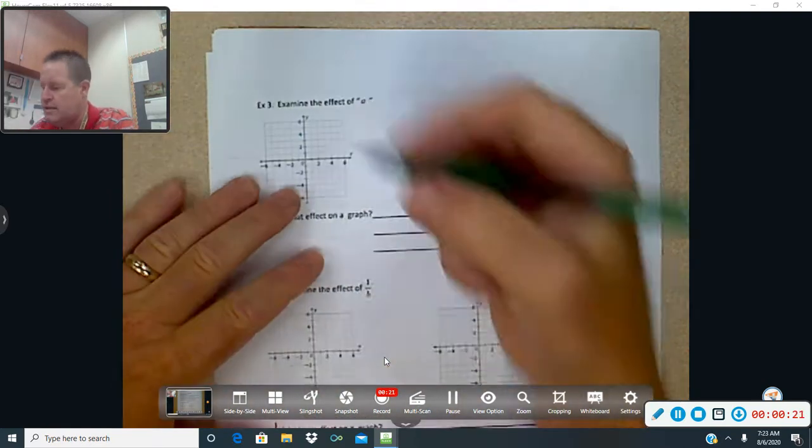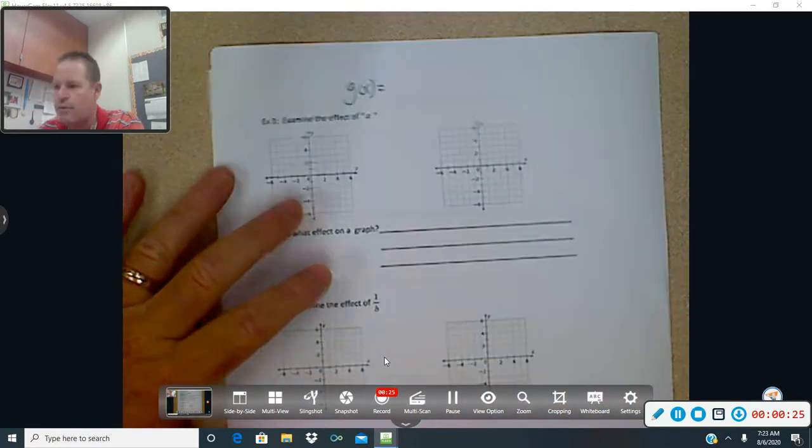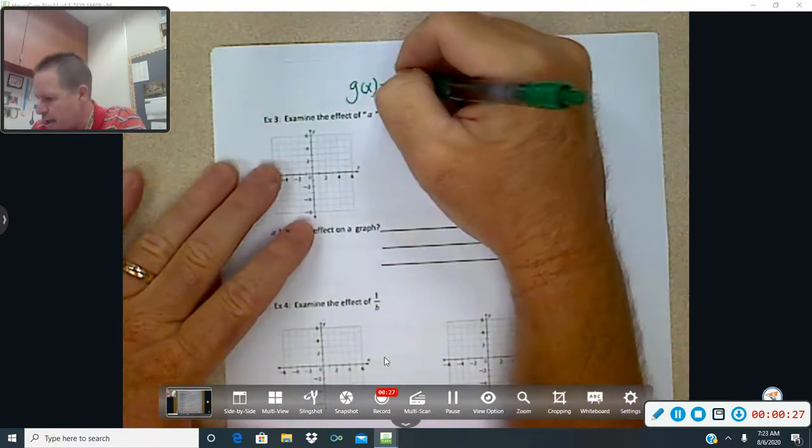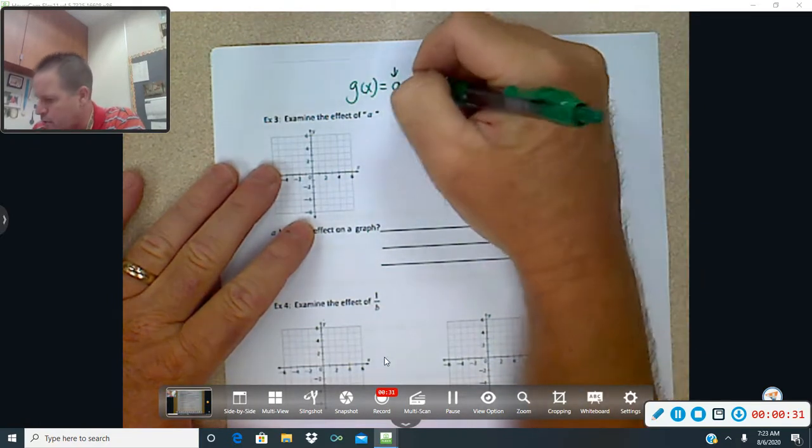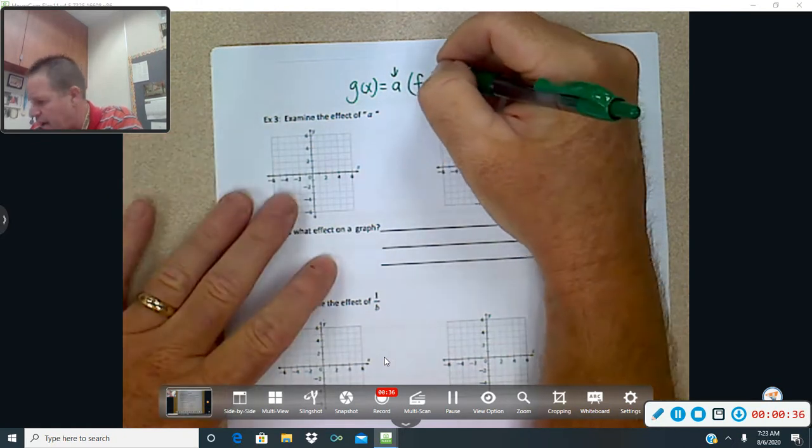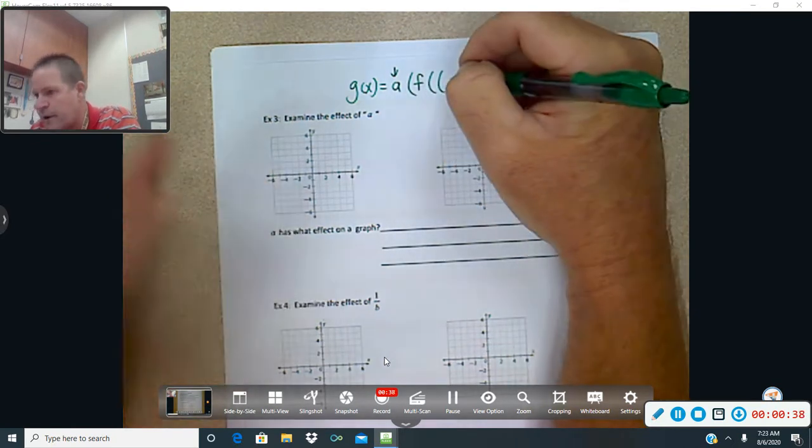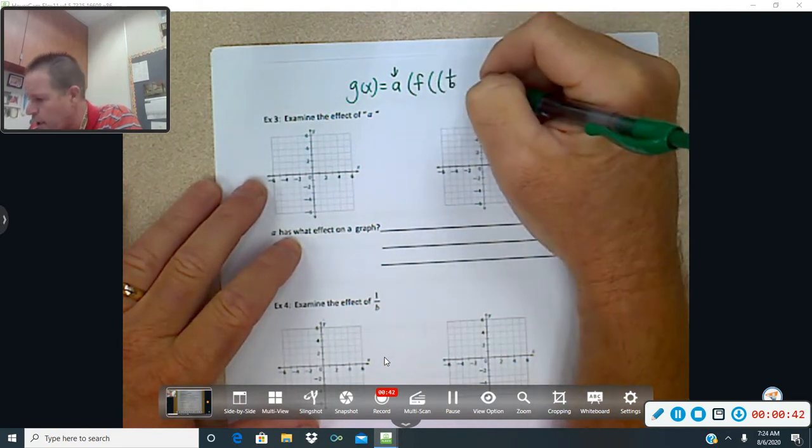So it is g of x, that is your transformed, your changed function, equals a. So this is what we're going to be focusing on right now is a number, but let's write everything else down. f, again, is your original function. f of, and then there's two parentheses here. This is a little confusing, to be very honest with you. OK, but we're going to get it. Again, give it time.